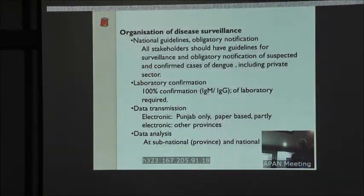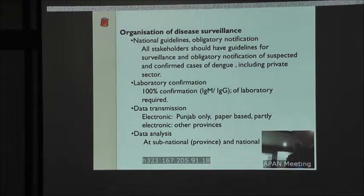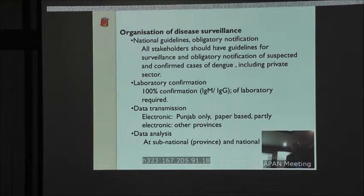For the organization of disease surveillance, we have national guidelines for obligatory notification. All stakeholders should have guidelines for surveillance and obligatory notification of suspected and confirmed dengue cases, including in the private sector. Laboratory confirmation — 100% laboratory confirmation — is required to notify a case. For data transmission, we have an electronic system in Punjab, one province only, and we are working to introduce it in all other provinces.